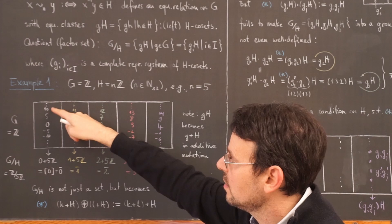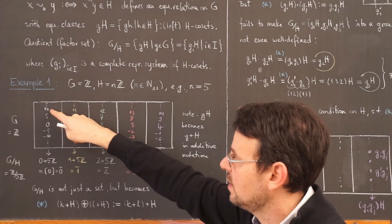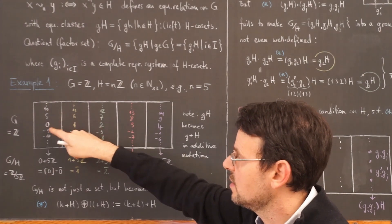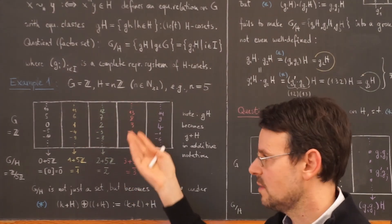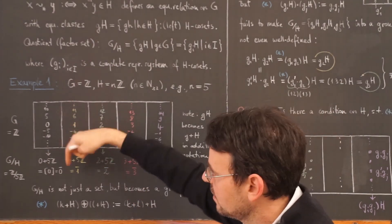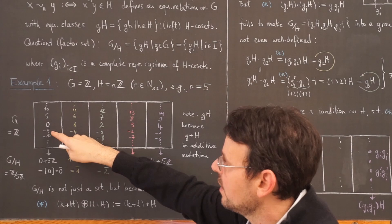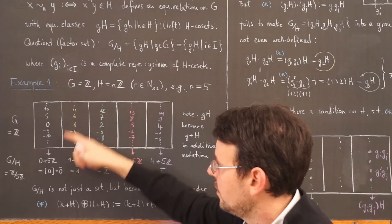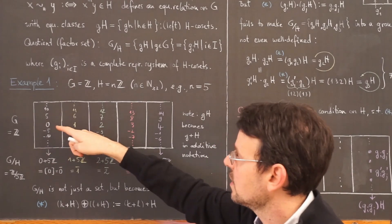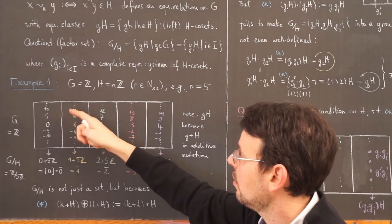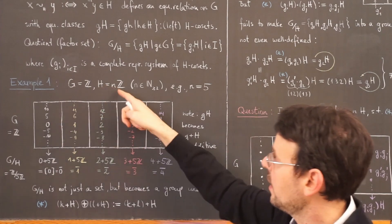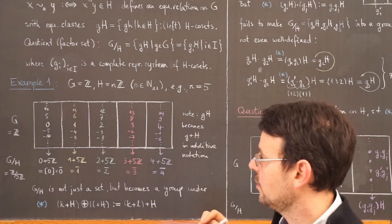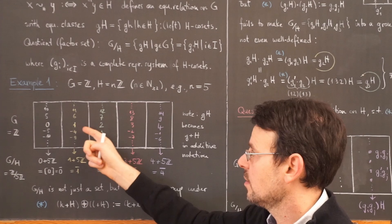The next element that is equivalent to 0 would be 10, because 10 minus 0 is 10, which is divisible by 5, and so on. And the same in the other direction, minus 5 is equivalent to 0. So this here would be one equivalence class or left coset of 0 by this subgroup h.